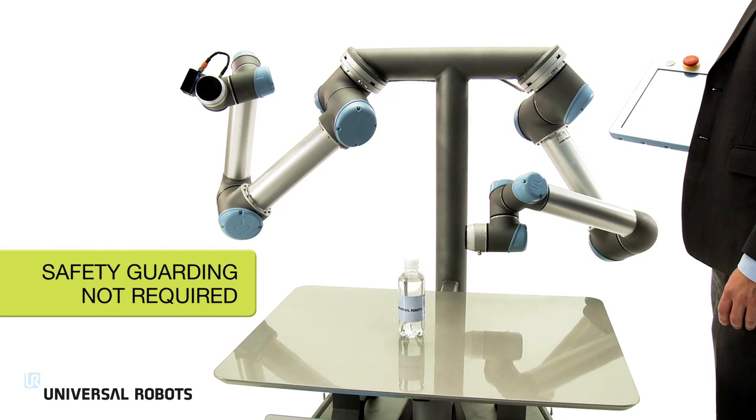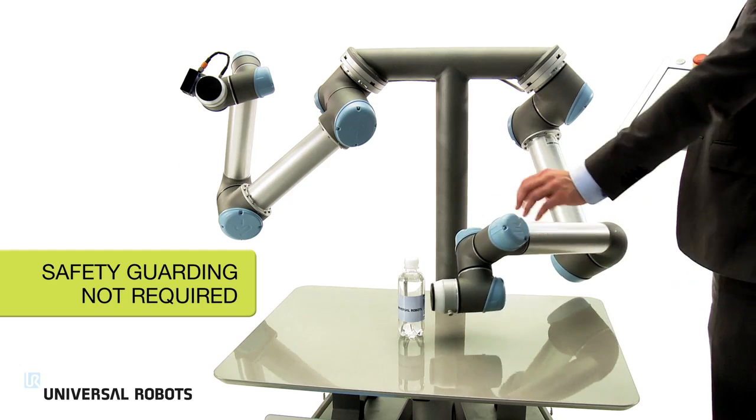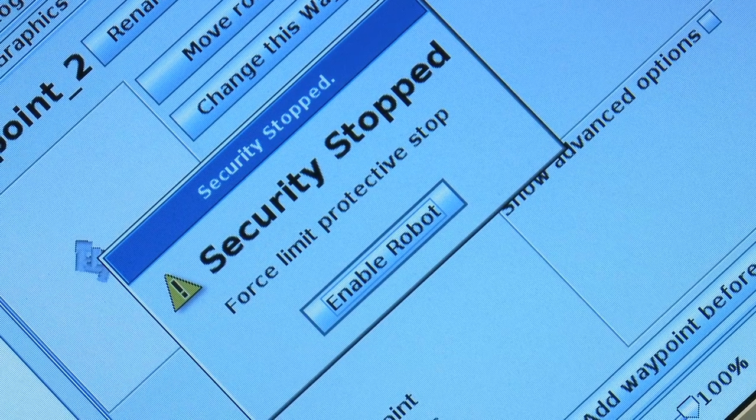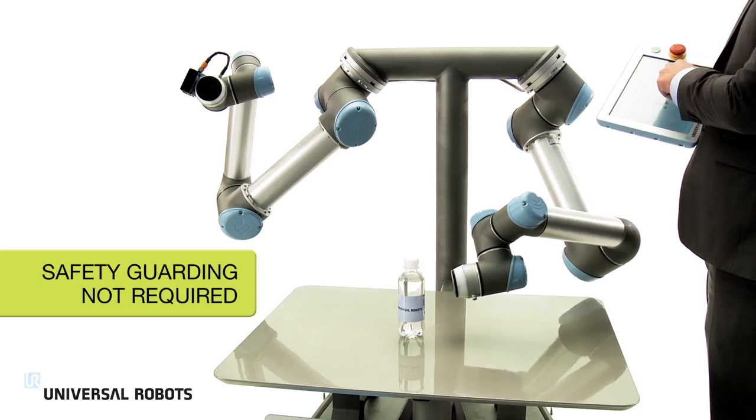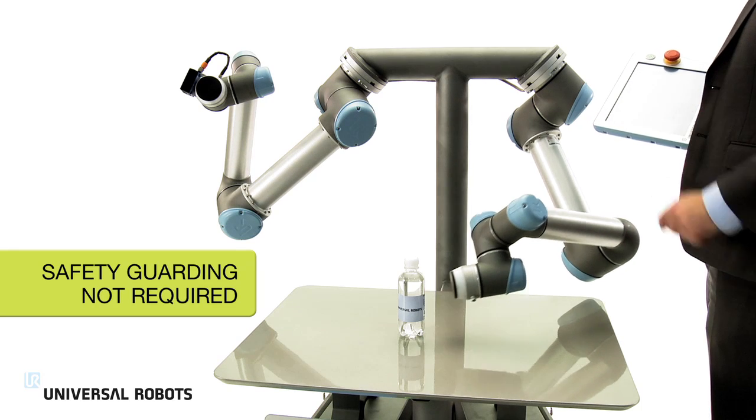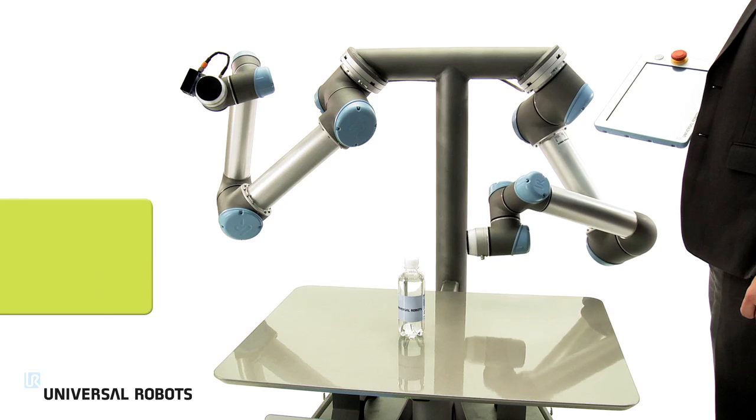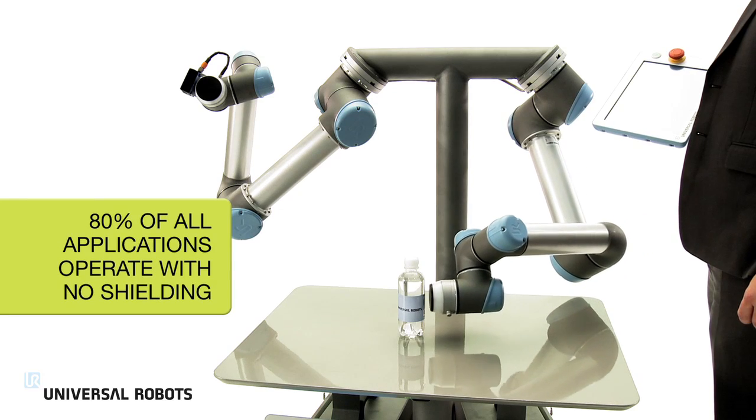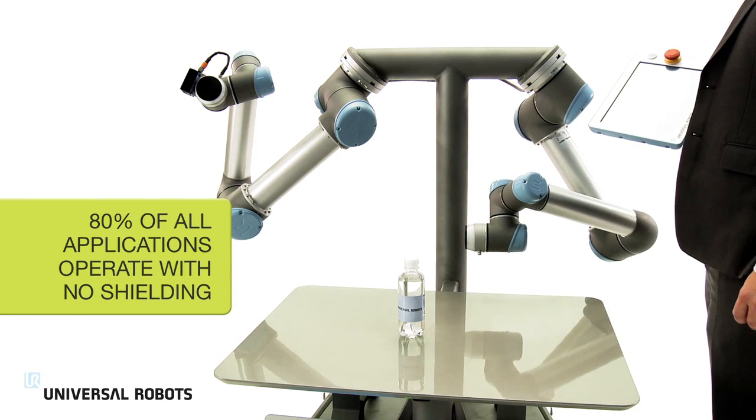Employees can work right alongside the robot. If a person comes into contact with the robot arm, it automatically stops operating, ensuring worker safety. This enables you to integrate the robot right into your production with no need for safety guarding. 80% of current Universal Robots applications operate with no shielding.